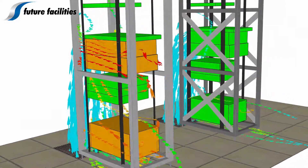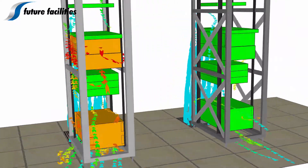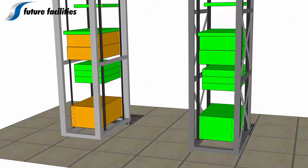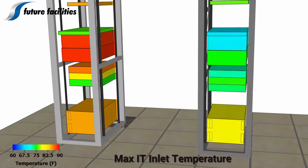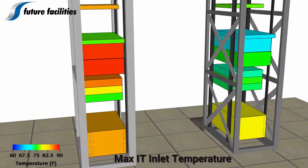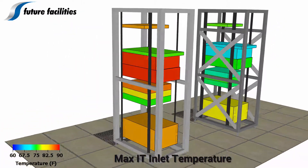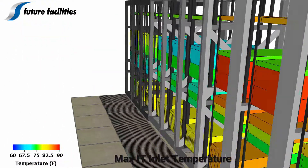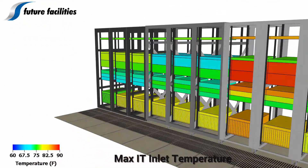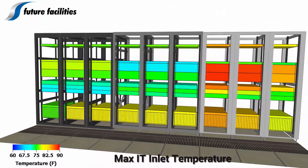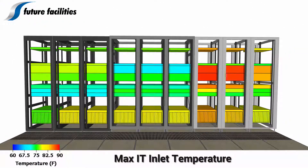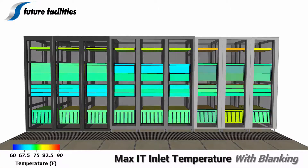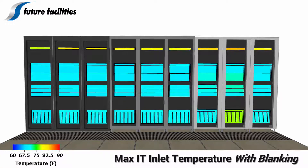Your sales team can leverage this information to show potential customers how your product performs compared to the competition. Changing the plot type to maximum inlet temperatures provides more insight into the thermal performance of each cabinet. It should be noted that even when blanking the empty U slots, there are higher inlet temperatures in the cabinet on the far right.